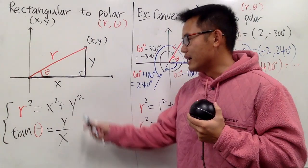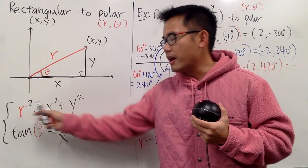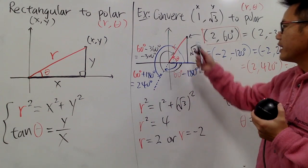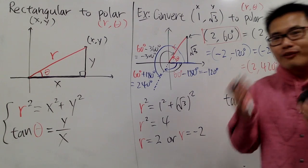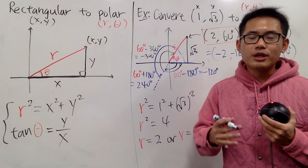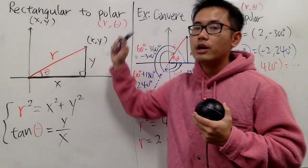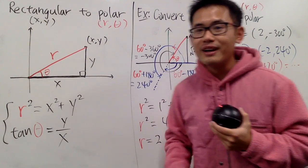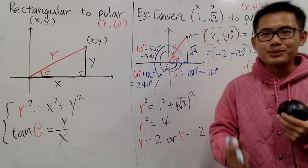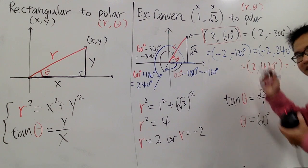The most important thing is to know the r formula and the tangent-theta formula, and pair r and theta together correctly to get the right point. Hopefully you find this video helpful. In my next video, I will show you guys how to go from polar to rectangular. If you are new to my channel, please subscribe. Thank you guys so much!